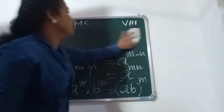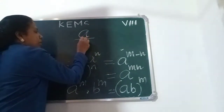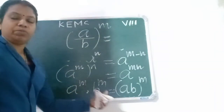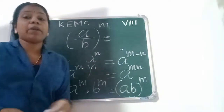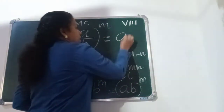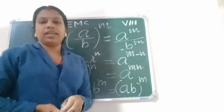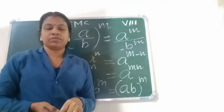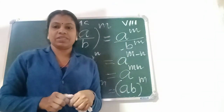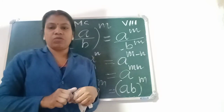One more law: A by B all power M — that is A divided by B, all power M — can be written as A power M divided by B power M. We use these laws for solving or simplifying exponential forms.